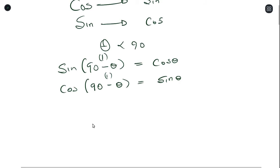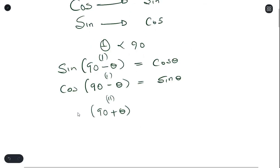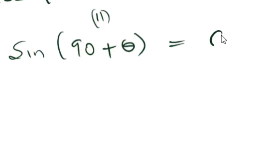Another way to change sine into cosine is when you have 90 plus theta. Now 90 plus theta is in the second quadrant. So if you have sine(90 plus theta), since sine is positive in the second quadrant, the value you get will be a positive cosine theta.